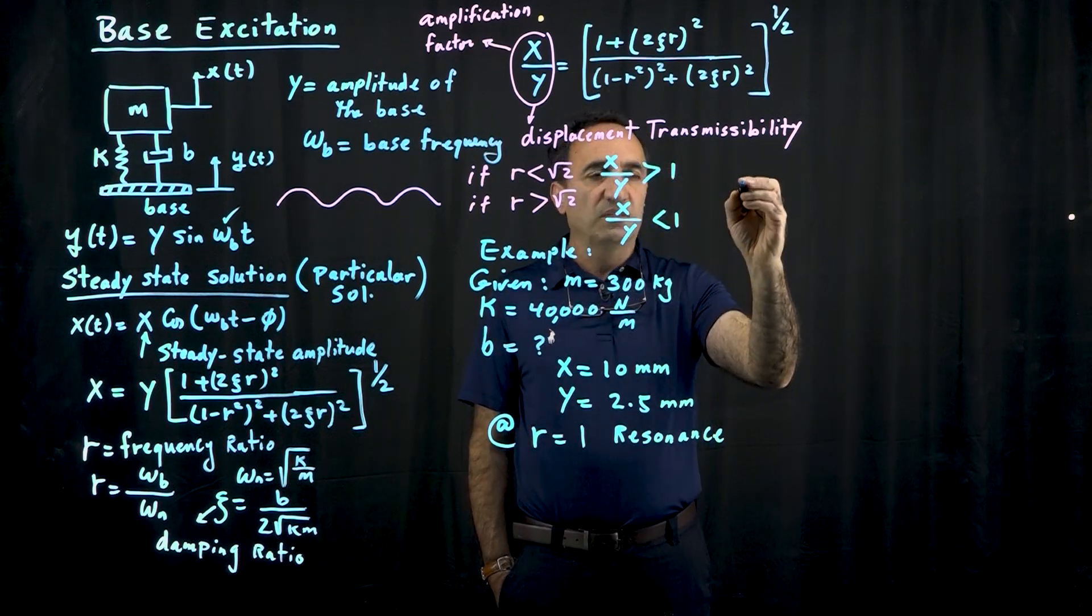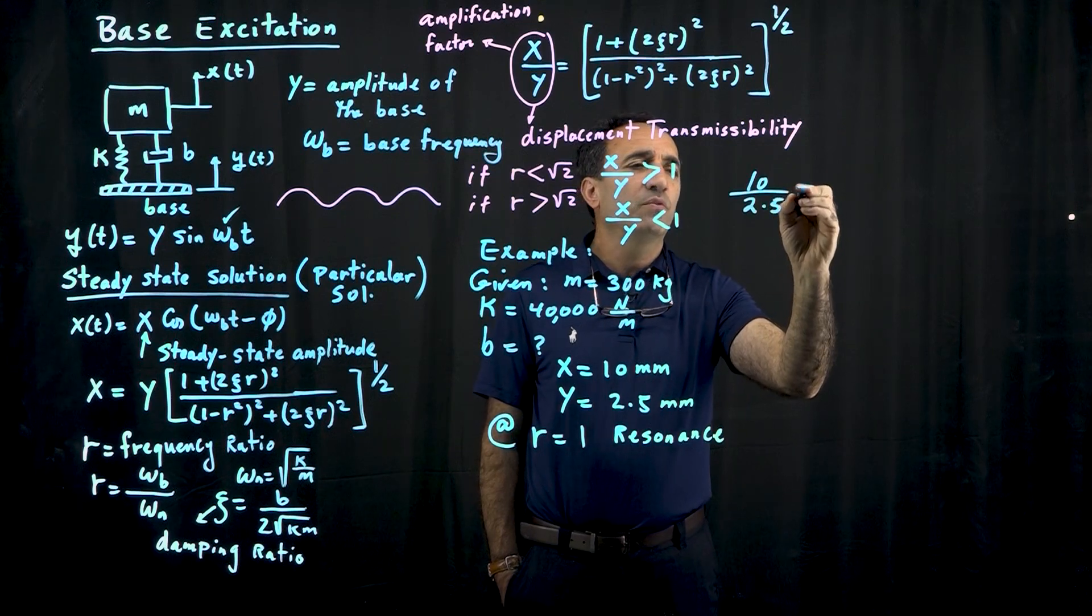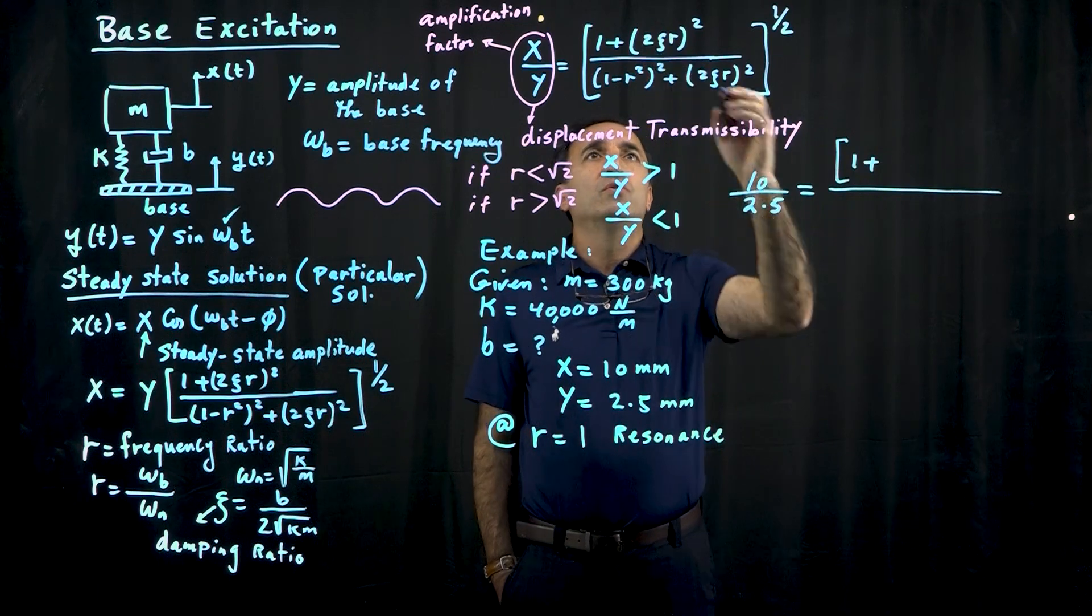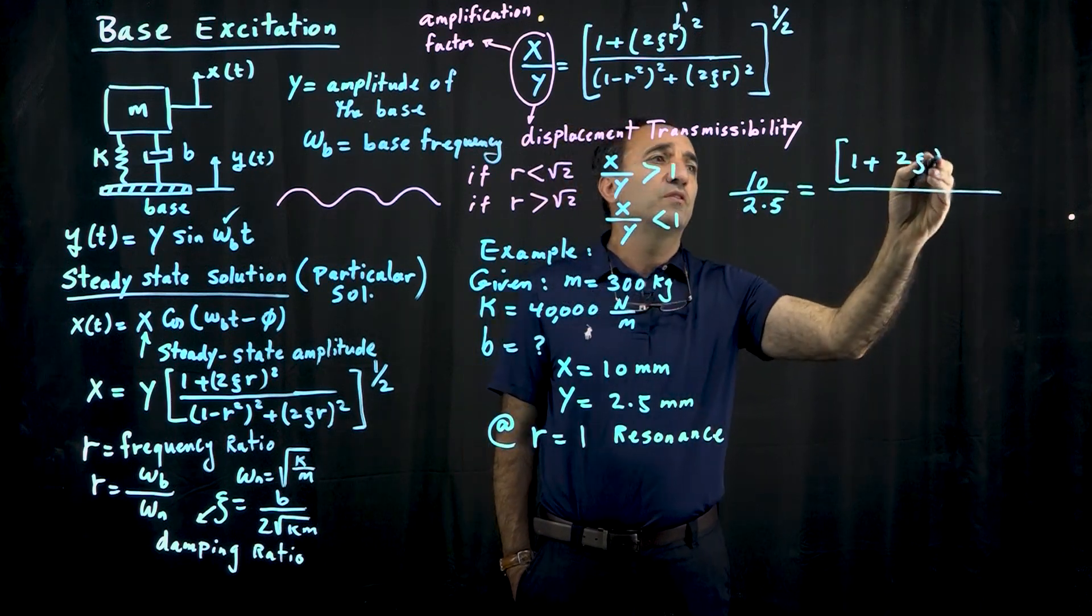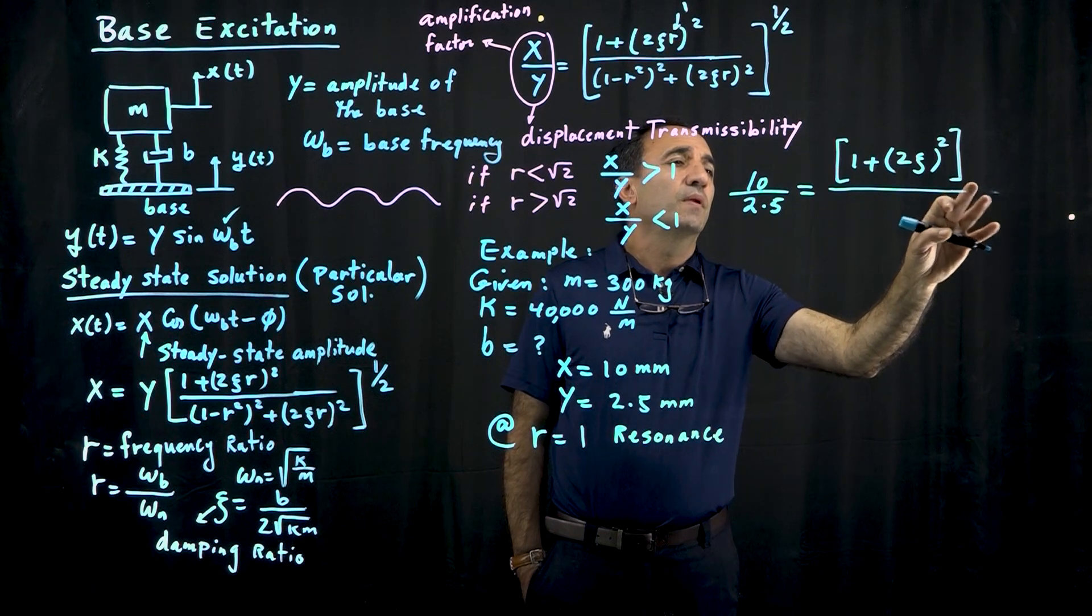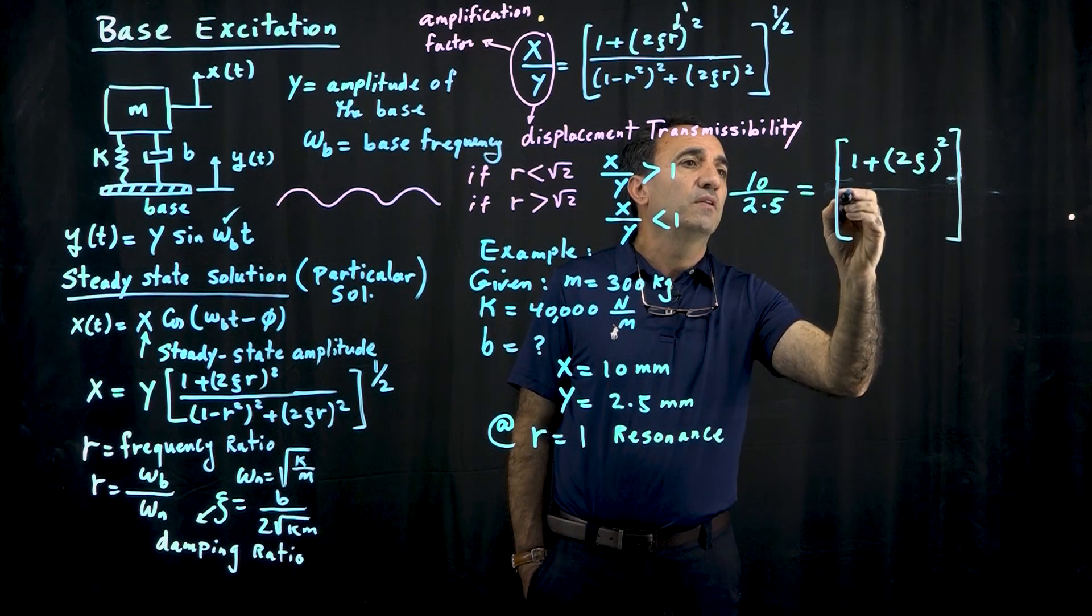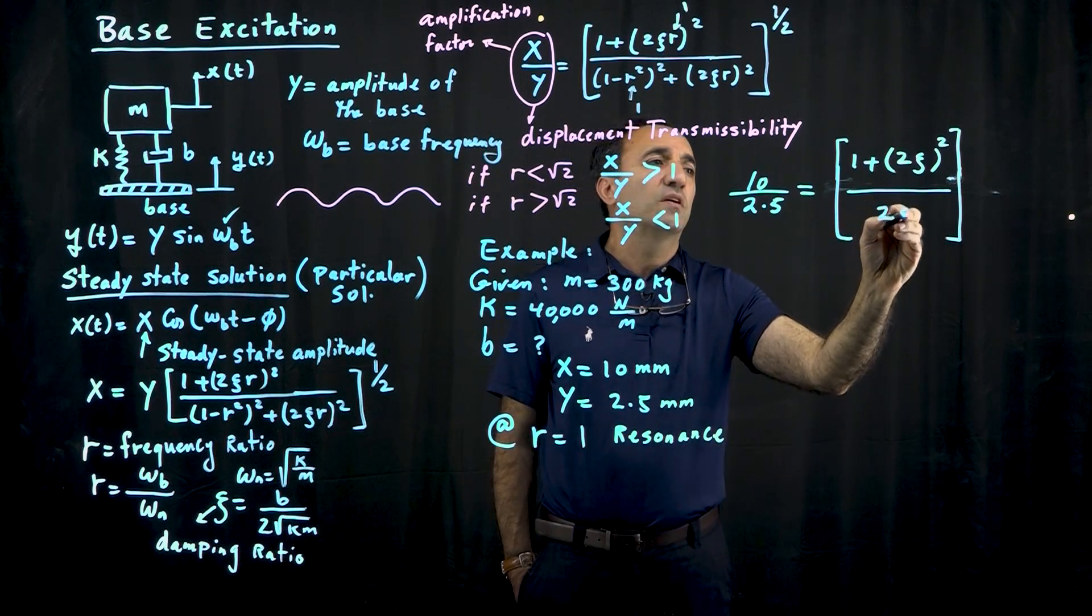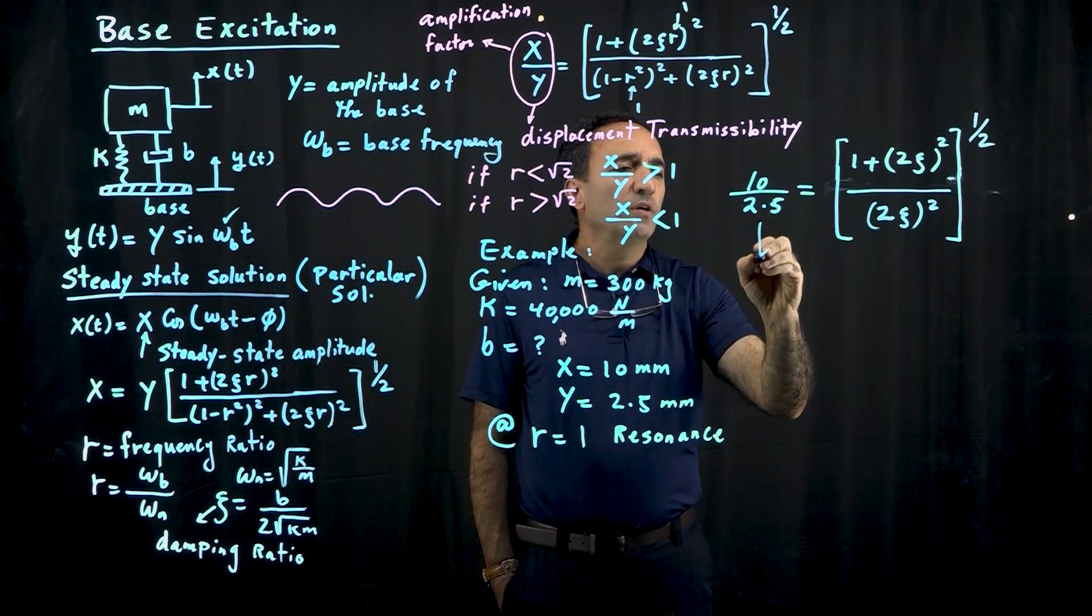So let's plug in x is 10 millimeters. And by the way, you don't have to change it to meters because remember, this is just a ratio. 10 over 2.5 is equal to 1 plus 2 zeta. Remember, r is equal to 1 now. So when you put r equal to 1, it just becomes 2 zeta squared. And let me actually put this as underneath. And look what happens here. When r is equal to 1, this is 0. And then we just get 2 zeta again squared. And remember, this is raised to power 1 half. So this becomes 4.